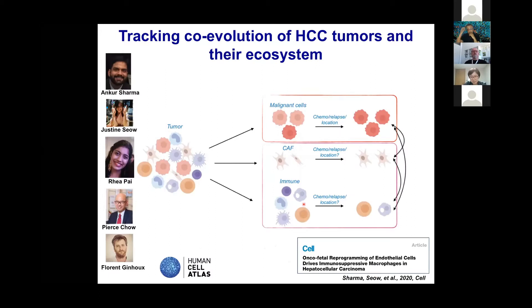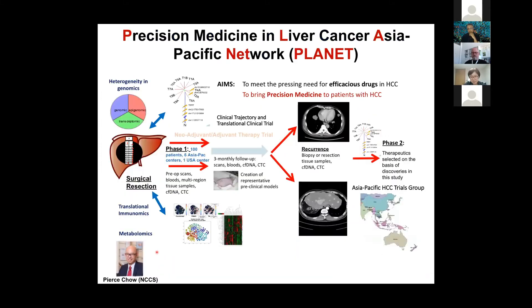This study was recently published a couple of weeks ago, ably led by Ankit Sharma who is a postdoc moving on to become a colleague at Curtain University in Perth, Australia. Justine did all of the bioinformatics analysis. Ria did most of the processing work for the single-cell pipeline. PS Chow, a liver surgeon at the National Cancer Center Singapore, provided all the samples, and Florange collaborated with us specifically on the myeloid cells and validating observations from single cells using flow.